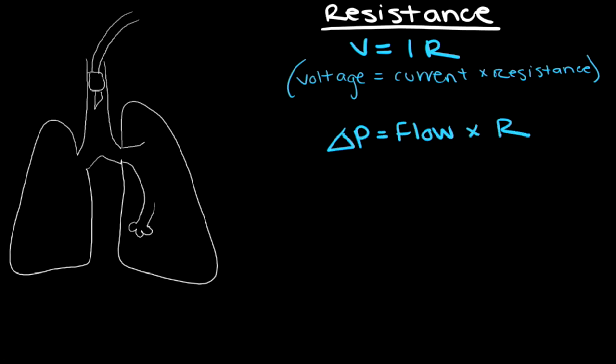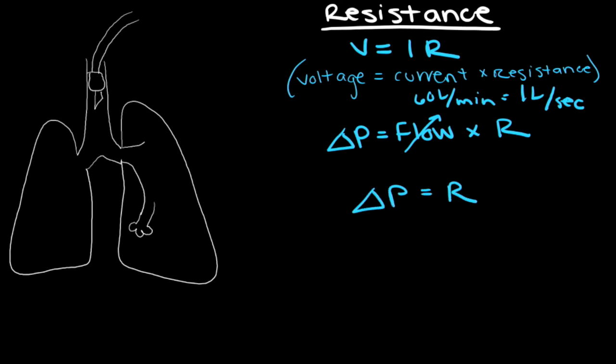Our change in pressure is similar to a change in voltage, and flow is similar to current. When we measure the resistance in mechanically ventilated patients, we set the flow to 60 liters per minute so that it equals one liter per second. This simplifies the equation to: change in pressure equals resistance. In mechanically ventilated patients, the pressures we use to calculate resistance are the peak inspiratory pressure minus the plateau pressure.